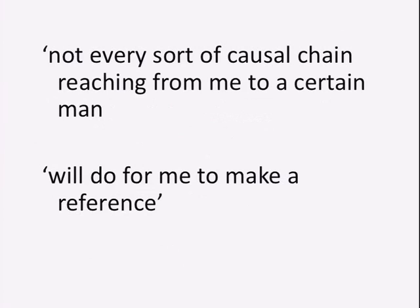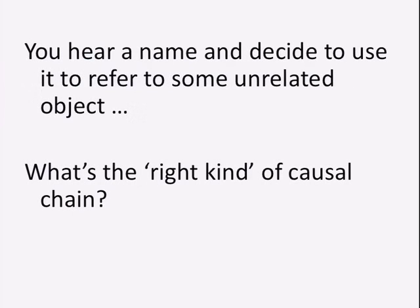Not every kind of causal chain that reaches back to something is going to do. Suppose I'm a great admirer of the Governor of California and I name my dog 'Schwarzenegger' in tribute. There is a causal connection — it's because of the governor's achievements that I chose the name — but when I call out 'Schwarzenegger, where are you?' I am not referring to the governor. The case we don't want is when you hear a name and use it to refer to some unrelated object. That's not the right kind of causal connection.